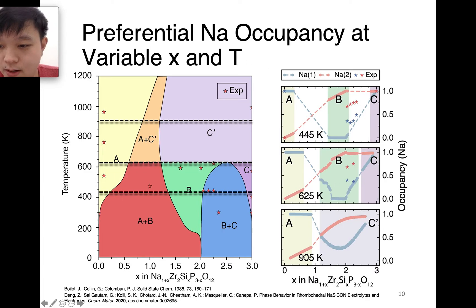Another interesting thing is to look at the sodium occupancy at different concentrations and temperatures. We took the same temperatures and concentrations as before, and here we can compare with experimental values as reported by Boilot. As we can see, at low concentration and low temperature, all the sodium tends to stay at the sodium 1 site, so the occupation of the sodium 1 site is one, whereas the sodium 2 site occupation is zero or almost zero. When you increase the sodium concentration, you will increase the occupation of the sodium 2 sites. When you go into the phase B region, suddenly sodium tends to go to the sodium 2 side.